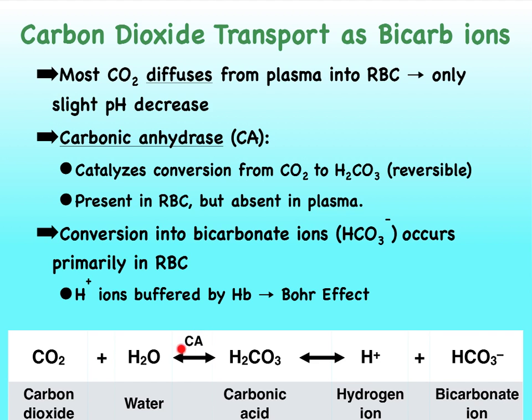Carbonic anhydrase is an enzyme we only find in our red blood cells and not in the plasma — we may find it in some other cells as well. But since we're focusing on our blood, our plasma does not have this enzyme. So the conversion into carbonic acid occurs much faster inside of our red blood cells.